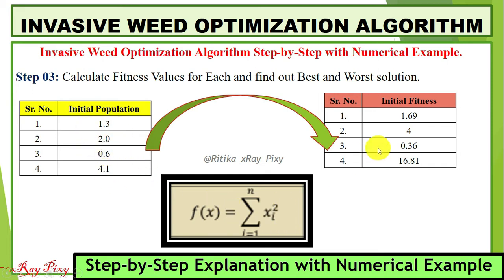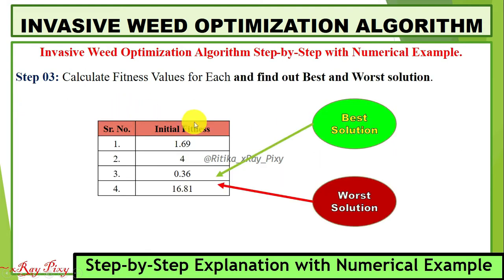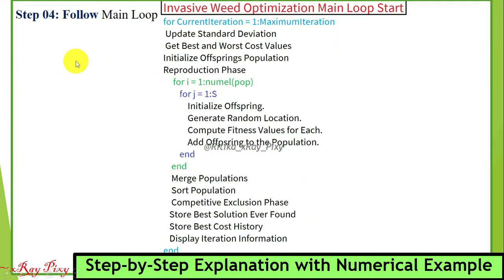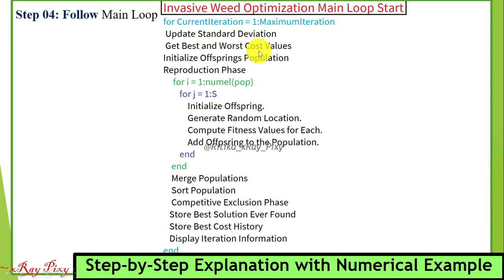We put all seed values into the fitness function and get the initial fitness for each. Then we find the best and worst solutions: best means the minimum fitness value and worst means the maximum fitness value. This is the main loop of the algorithm — a nested for loop. The stopping criteria is checked; when matched, stop and display the result. Inside the loop, first we update the standard deviation sigma, then compute the best and worst values required for seed production.